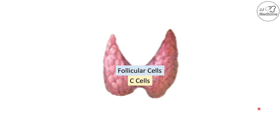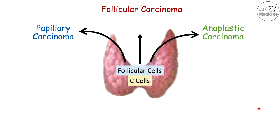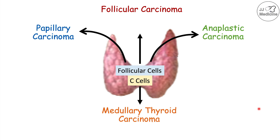Getting into more specific pathophysiology, there are two main cells responsible for these particular types of cancer: follicular cells and C-cells. Follicular cells are responsible for papillary carcinoma, follicular carcinoma, and anaplastic carcinoma. Cancers of C-cells are responsible for medullary thyroid carcinoma.